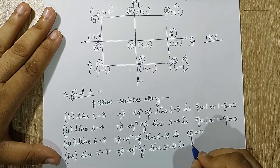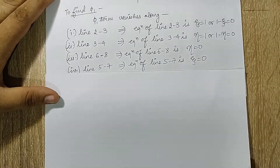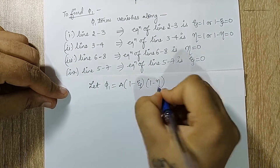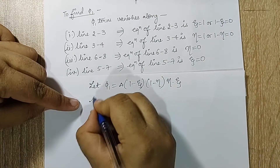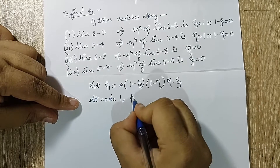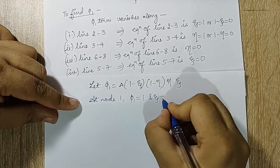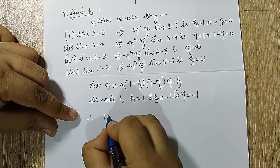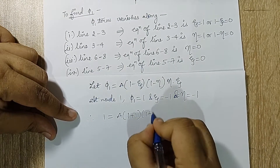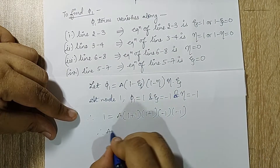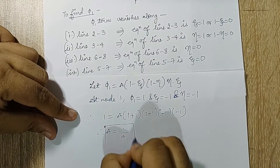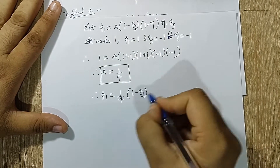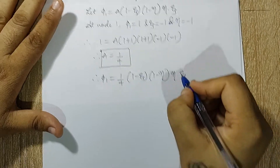The equation of line five-seven is zeta equal to zero. So let φ₁ equal a times (one minus zeta)(one minus eta), with eta and zeta at node one both equal to minus one. At node one, φ₁ will be one, so one equals a times (one plus one)(one plus one), giving a equals one quarter.